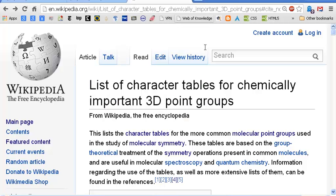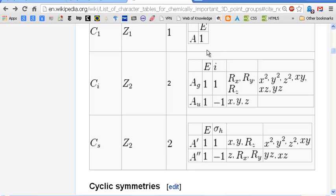Let's go to our list of character tables. I'll just take something at random here. This is for the CI group, which contains the identity and inversion operators. We have going down here, the maximum number here is 1.